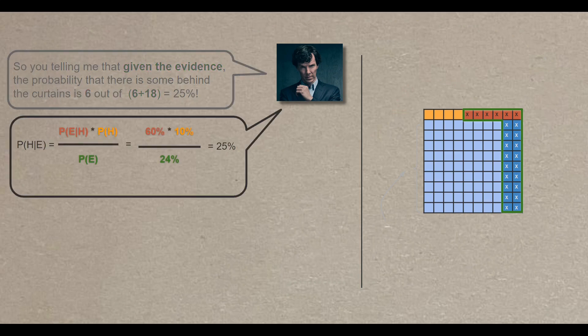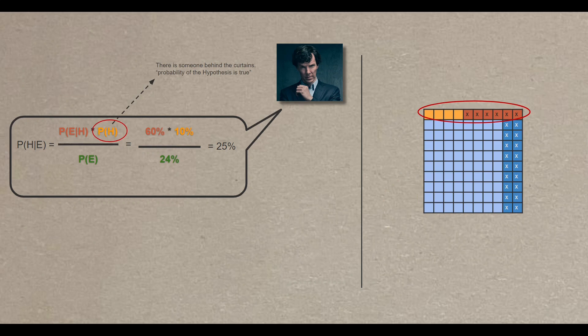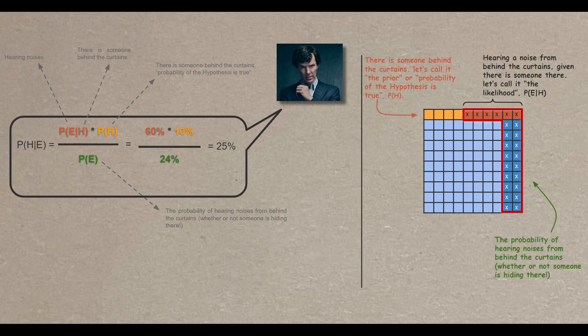This can be presented mathematically using the famous Bayesian equation, where the probability that the hypothesis is true given the evidence, meaning the probability there is someone behind the curtains given hearing the noises, equals to the following. First, the probability of the theory being true regardless of any evidence, meaning there is someone behind the curtains regardless of hearing any noises. Then we will multiply that by the probability of the evidence given the hypothesis is true, meaning the probability of hearing the noises given that there is someone behind the curtains. Then all of that is divided by the probability of the evidence itself, regardless of the hypothesis, meaning the probability of hearing noises from behind the curtains whether or not there is someone behind the curtains.